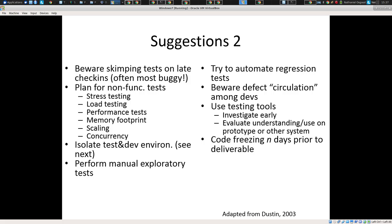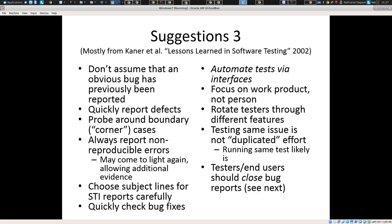Make sure devs don't circulate defects amongst each other just on an ongoing basis — I assign it to you, you assign it to so-and-so, they assign it back to me. Try to find testing tools that work for your platforms, investigate them early and evaluate how they work in prototypes. Code freeze prior to deliverable. Don't assume obvious bugs have been reported previously — things get missed — make sure it gets reported or check if there's an existing report before discarding it. Bugs often live at boundaries — corner cases and boundary cases — because that's where logical mistakes are often made by developers.